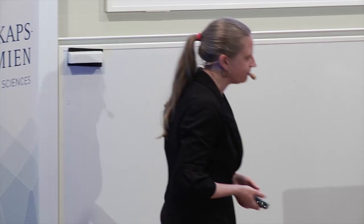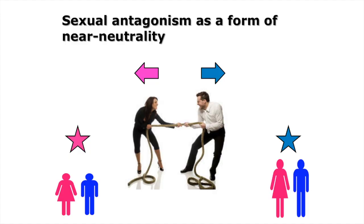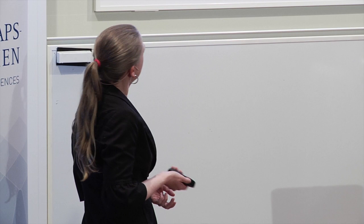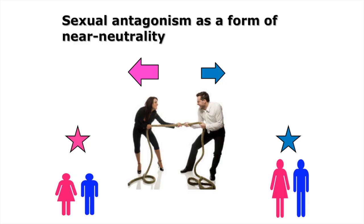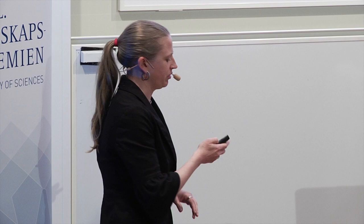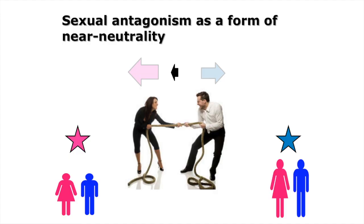You can think of this as a genetic tug-of-war. Selection on the men is pulling the population towards the male optimum, trying to fix alleles for being tall, whereas selection on the women is trying to pull towards the female optimum, fixing alleles for being short. If this is perfectly balanced, these alleles would actually be completely neutral. In practice that's probably not the case — you'll probably have some asymmetry, meaning the net selection pressure might be directional but very, very small — in other words, nearly neutral.